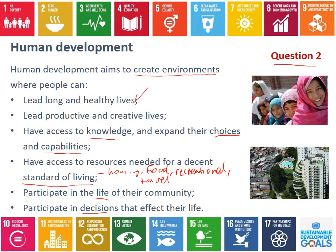For question two, you're going to work backwards and think about what kinds of things contribute to each of these dimensions. What do you need to have to lead a long and healthy life? What do you need to have a productive or creative life? Try and come up with a few for each — some might be things your government provides, some might be things your community allows, and some might be personal things.